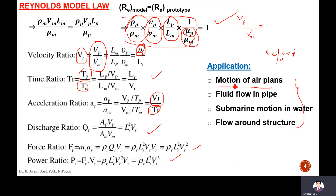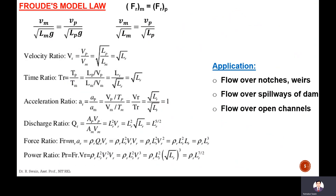Reynolds model law is applied in studies such as motion of airplanes, fluid flow in pipes, submarine motion in water, and flow around structures. In these types of studies, the Reynolds number is made equal between model and prototype, and that model is said to follow Reynolds model law.